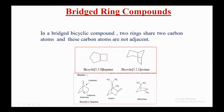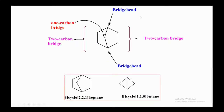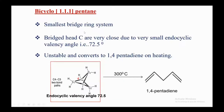In bridged bicyclic compounds, two rings share two carbon atoms that are not adjacent. Examples include bicyclo[3.2.0]heptane, bicyclo[3.2.1]octane, norbornane, camphane, and alpha-pinene. Bicyclo[1.1.1]pentane is the smallest bridged ring system; its bridgehead carbons are very close due to very small endocyclic valence angles of 72.5°, and it converts to 1,4-pentadiene upon heating.